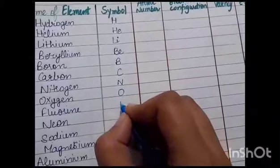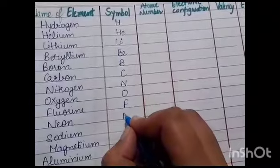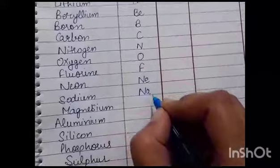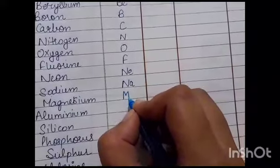Oxygen is O. Fluorine is F. Neon is Ne. Sodium is Na. Magnesium is Mg.